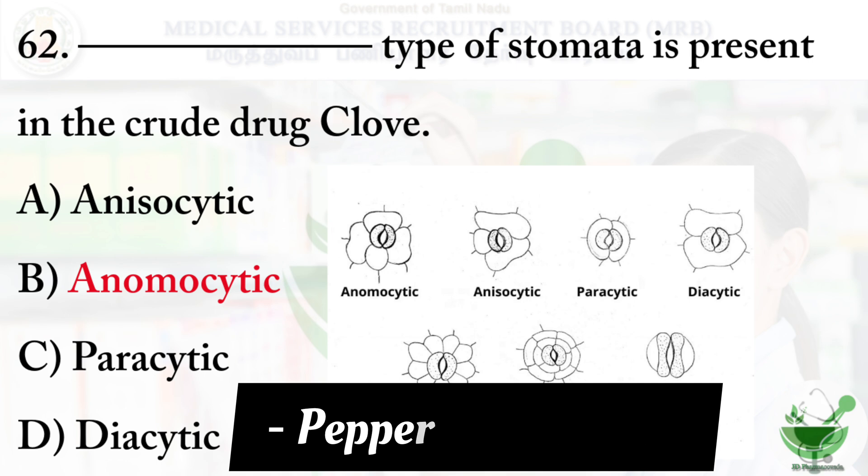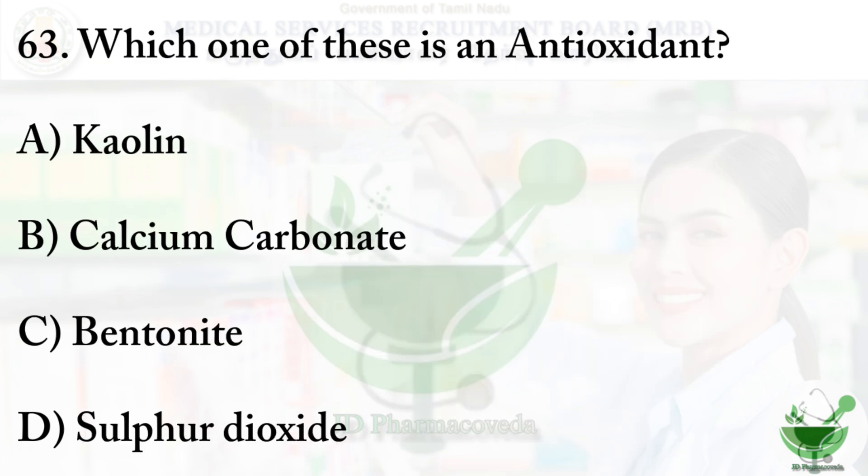Question number 63: which one of these is an antioxidant? Option A: kaolin. Option B: calcium carbonate. Option C: bentonite. Option D: sulfur dioxide. The right option is option D, sulfur dioxide.